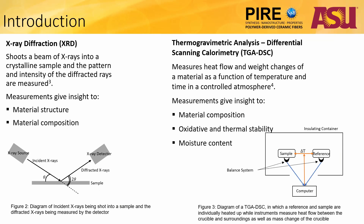XRD is a process in which a beam of x-rays are shot into a crystalline sample, and their diffraction pattern and intensity are measured. These measurements give insight to the structure and composition of a material. An X-ray source emits incident X-rays at an angle of theta, and the rays are diffracted by the sample and measured by an X-ray detector again at an angle of theta. The intensity of these rays are measured and plotted against 2-theta because the angle must be with respect to the incident rays rather than the sample.